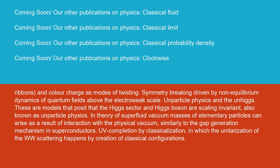In theory, if superfluid vacuum masses of elementary particles can arise as a result of interaction with the physical vacuum, similarly to the gap generation mechanism in superconductors. UV completion by classicalization, in which the unitarization of the WW scattering happens by creation of classical configurations.